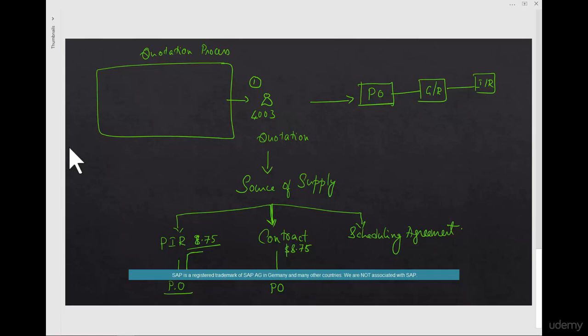Same thing with scheduling agreements. You can convert that quotation into a scheduling agreement also. So if you know that you're going to require 100 quantity every week, you can create a scheduling agreement. And you don't even need to create POs. When the date is right, based on the delivery schedule, you get the goods, and then you get the goods and invoices at $8.75 per pound.